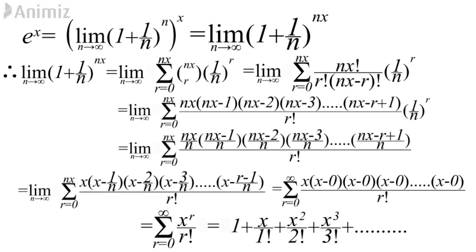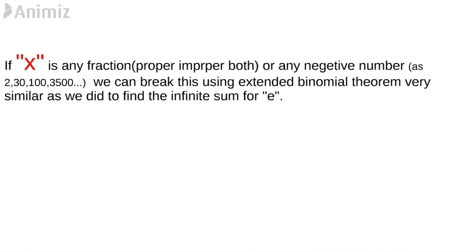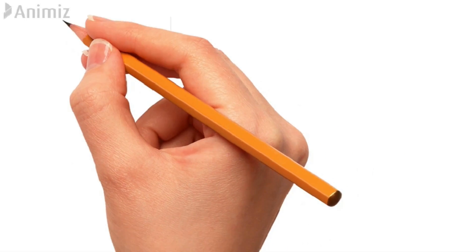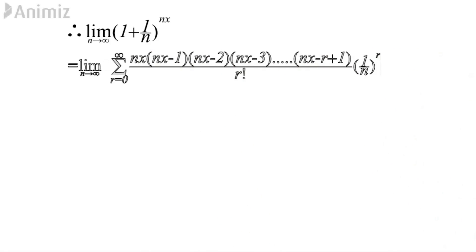In this case we only considered x as a positive integer, but what if x is not — maybe it is a positive fraction, negative fraction, or a negative integer? For those cases, here is the derivation using the Extended Binomial Expansion Theorem: lim(n→∞) Σ from r=0 to infinity of [nx·(nx-1)·(nx-2)·...·(nx-r+1)] / [r! · n^r].